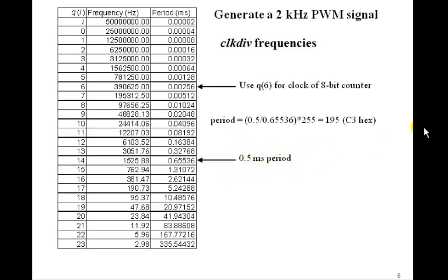And in fact, the period that we want, we could just calculate to be 0.5 divided by this 0.65536 times the 255 count, which would mean if we set the period to 195 or C3 hex, we should get a 0.5 millisecond period.